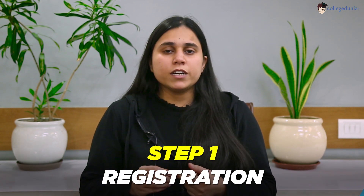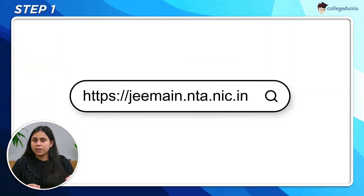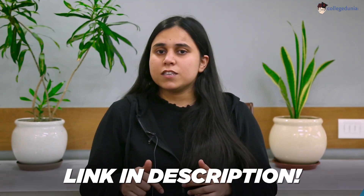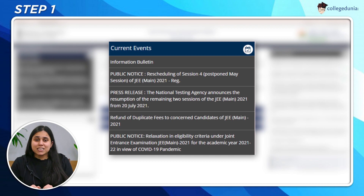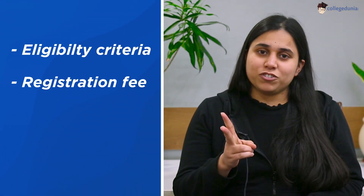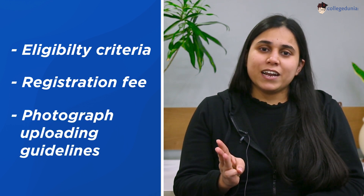The first thing you have to do is visit the official NTA website. The link has been given in the description and has also been mentioned somewhere down below. Once the site opens, make sure that you read the information bulletin. This information bulletin is very important. You will get all the details right from the eligibility criteria, the registration fee, the photograph uploading guidelines and so on. After reading this information bulletin, you are well equipped with all the required details for JMAN 2022. Now, let's go to the next step.